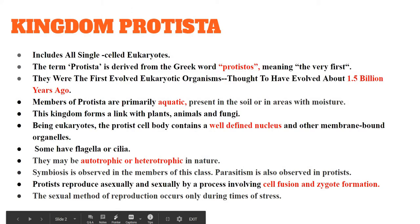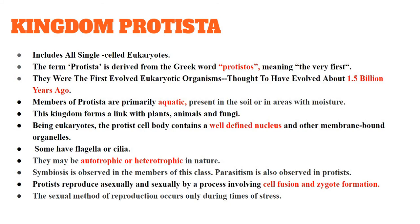Kingdom Protista consists of all the single-celled eukaryotes. The members of kingdom Monera were all prokaryotes, organisms having a primitive nucleus. But when coming to kingdom Protista, all the members are unicellular or single-celled, and all of them are eukaryotes.